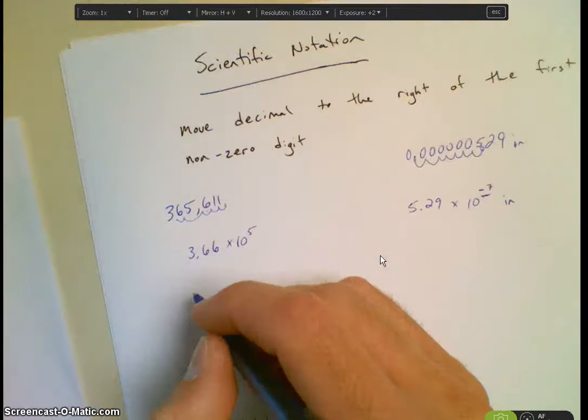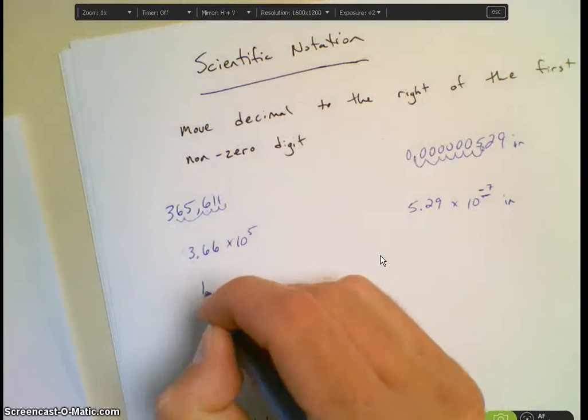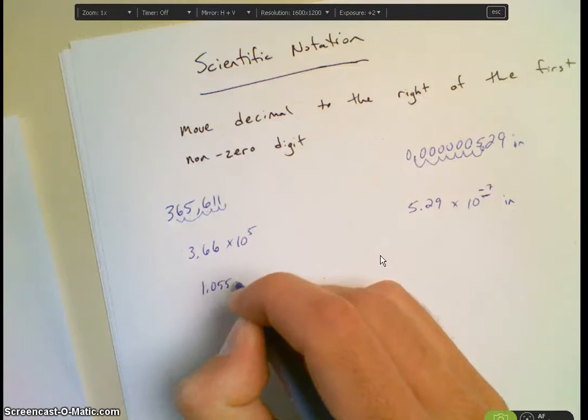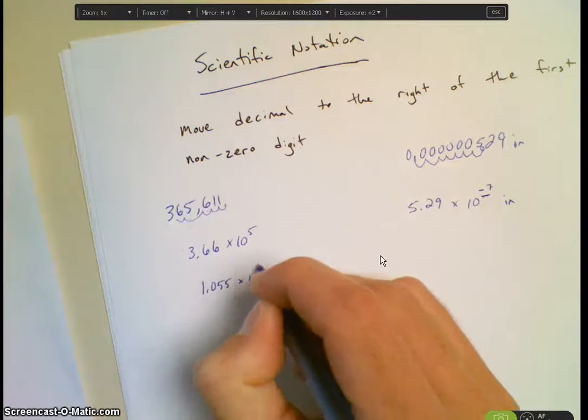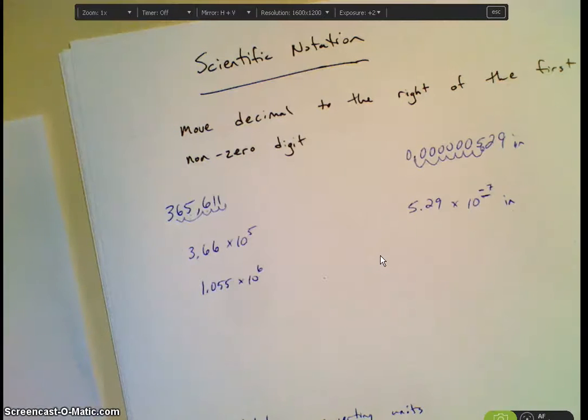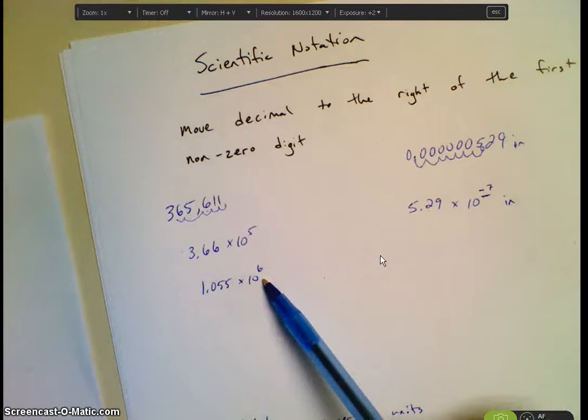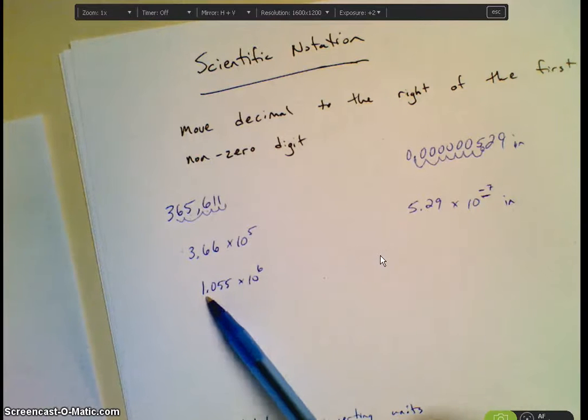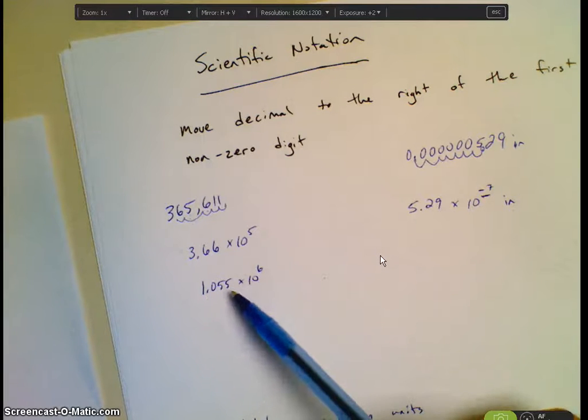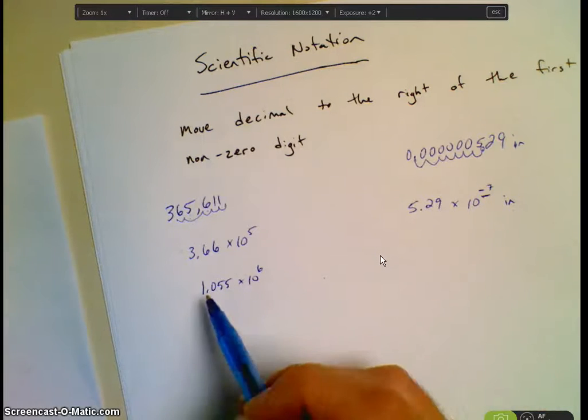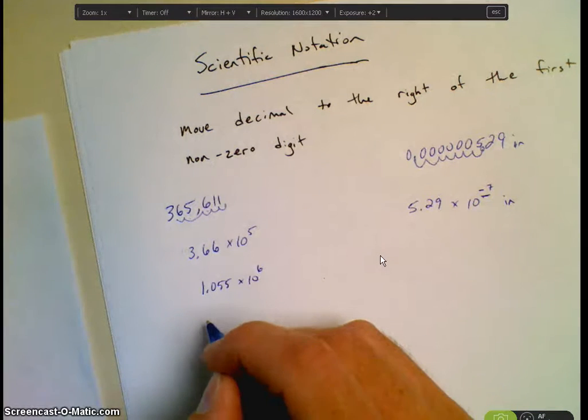So it gives us an example of 1.055 times 10 to the 6th. Now a lot of people get confused on which way to move the decimal. Well, again, this is where we use our brain. 10 to the 6th. Big number or small number? Big number. So this 1 is going to get bigger. So which way do I have to move the decimal to get a bigger number than 1? Correct. So I'm going to move it this way. I'm going to move it six spots.